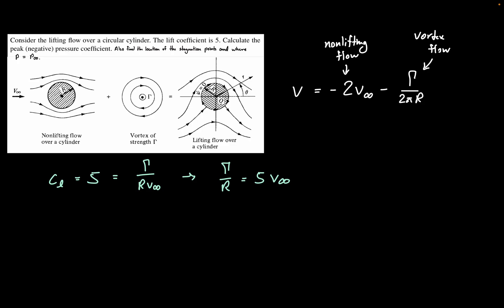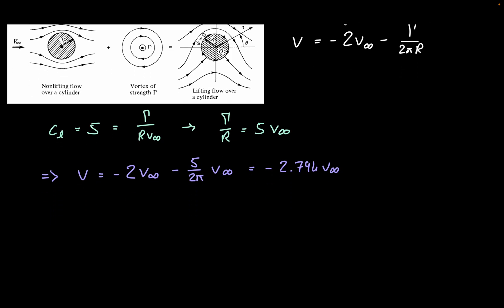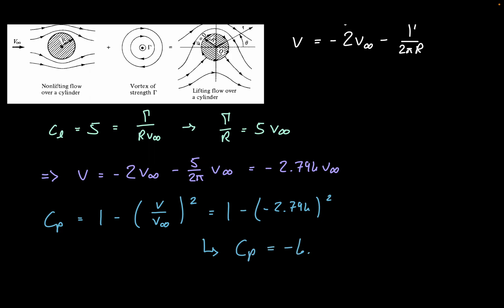The next step is to plug our gamma divided by R into the equation for V, such that V equals negative 2 times V infinity minus 5 divided by 2 pi times V infinity. That leaves us with negative 2.796 times V infinity. Bringing in the coefficient of pressure equation, CP equals 1 minus (V divided by V infinity) squared, and plugging in V, we get a CP of negative 6.82. So we have one part of this problem already completed.